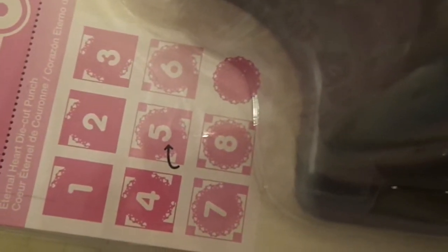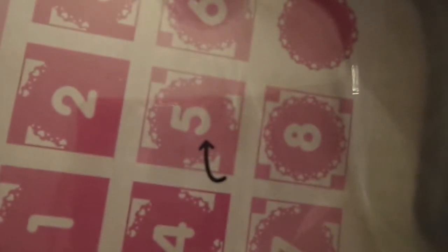This one looks like this. It is called Eternal Heart Die Cut. So let's see if we can get closer. It's got little hearts around the border. Really pretty. So this is the purple one.